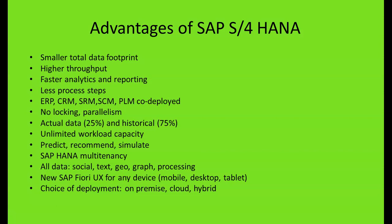What are the advantages of SAP S4 HANA? Smaller total data footprint, higher throughput, faster analytics and reporting, fewer process steps, and ERP, CRM, SRM, SEM, and PLM are all co-deployed together on the SAP S4 HANA platform. There is no locking, we have parallelism, actual data is 25% and historical data 75% is still in the system, unlimited workload capacity, and the ability to predict, recommend, and simulate data. SAP HANA multi-tenancy capabilities are also available.